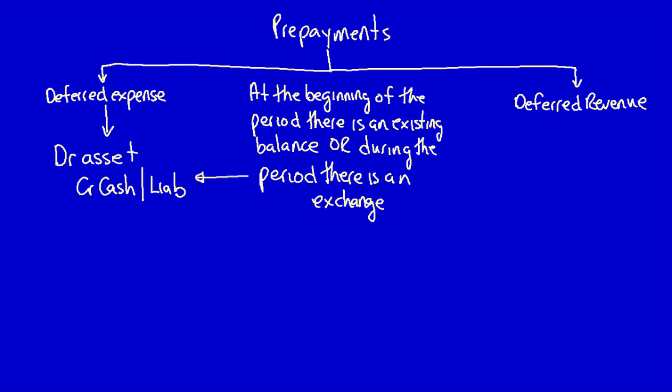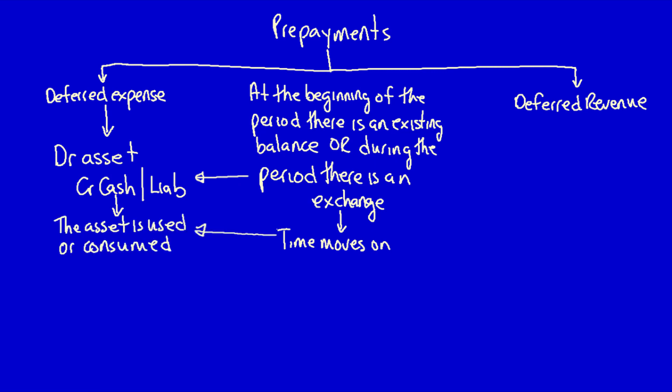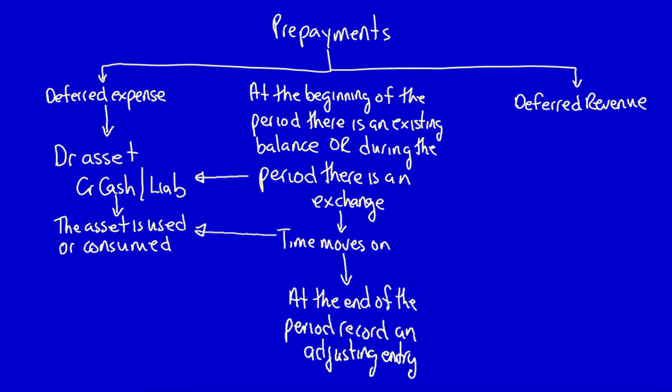Then time moves on. As time moves on, the company uses or consumes the asset, usually to help generate revenue. At the end of the period, the company has to record an adjusting entry. For the deferred expense adjusting entry, the company recognizes the use or consumption of the asset by moving it from being an asset to being an expense on the income statement.